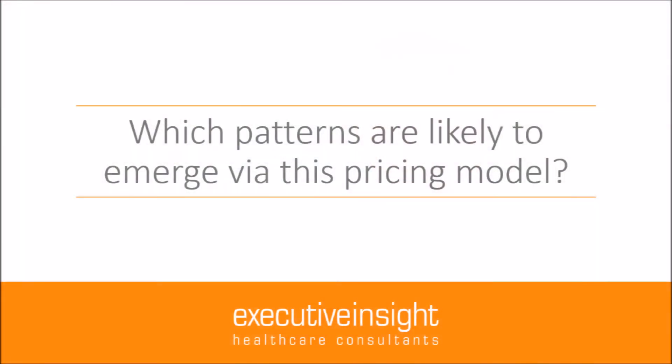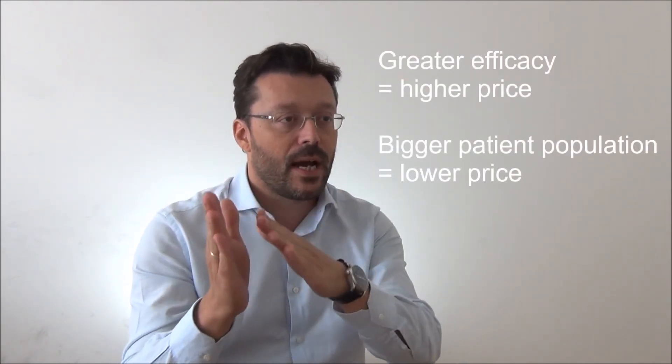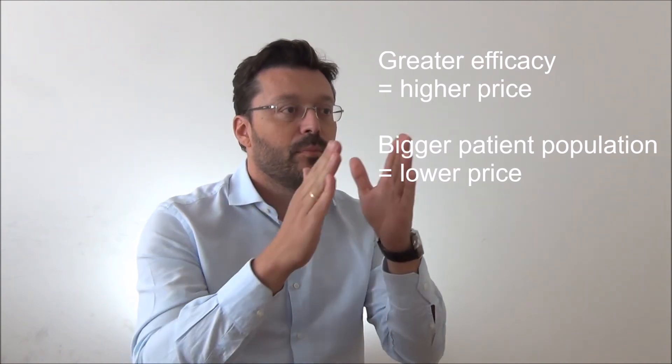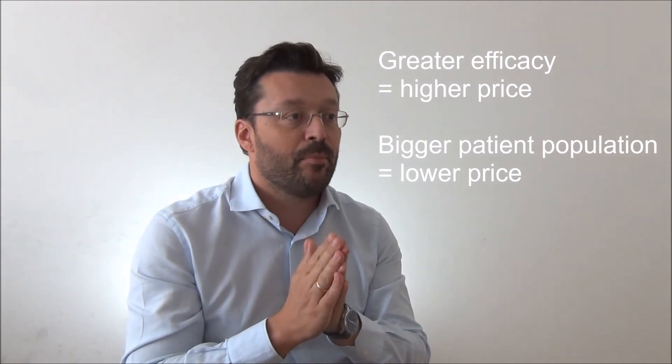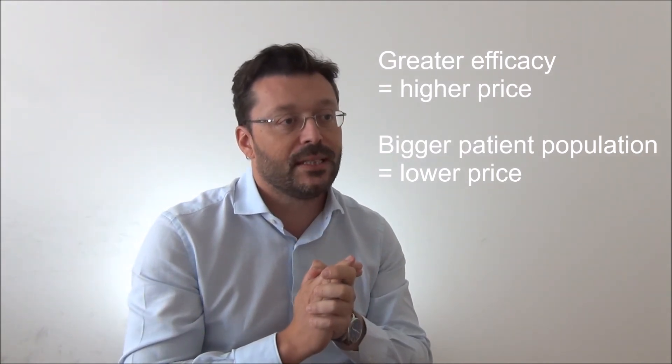Here we are talking about days rather than weeks at a fraction of the cost. Using this method, three clear patterns emerge. The first and most common is a strong correlation between greater efficacy and higher treatment costs, and between bigger eligible patient populations and lower price. Cardiovascular drugs with mortality benefit present this pattern very clearly.